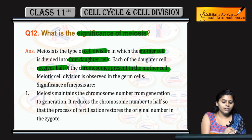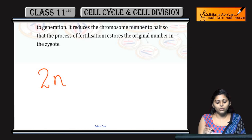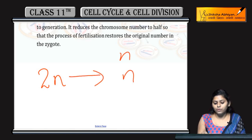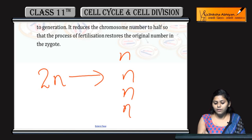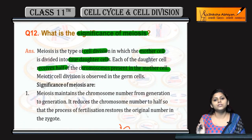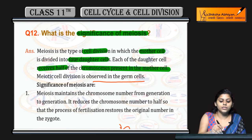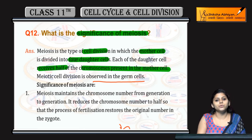If the mother cell has 2N number of chromosomes, then the daughter cells have N number of chromosomes. There are four daughter cells, and they each have half the number of chromosomes. Meiosis is mainly observed in germ cells.